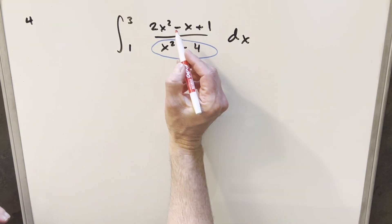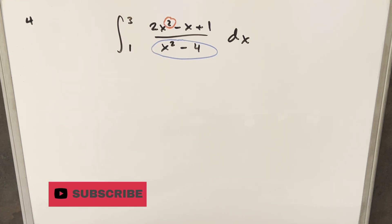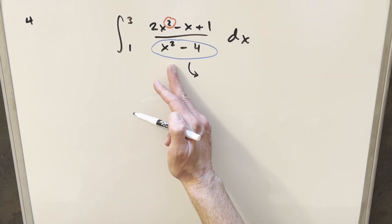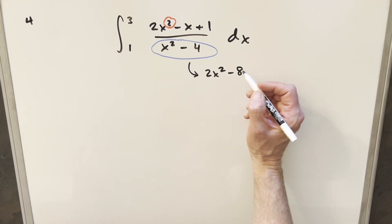But before I get to that, what I want to deal with is we've got the same power in the exponent here, the same degree in the numerator and denominator, so I'm going to want to simplify this. We could do polynomial long division, but I kind of like to just do it on the fly. But let's just notice if I multiply this denominator by two, that would be two x squared minus eight.